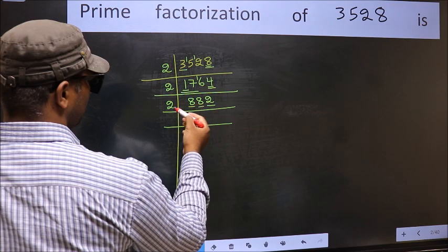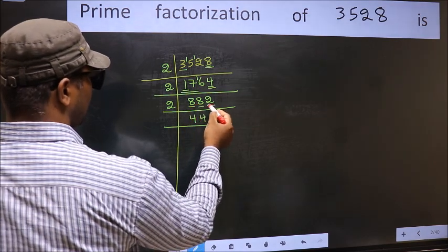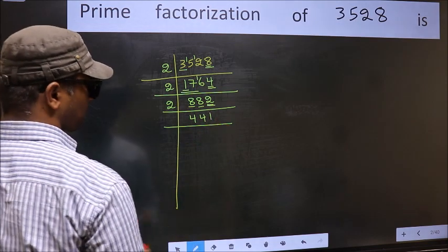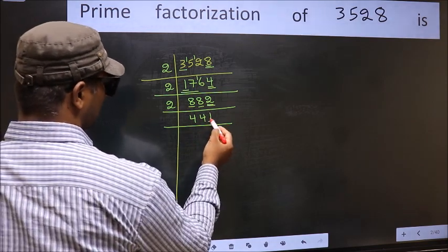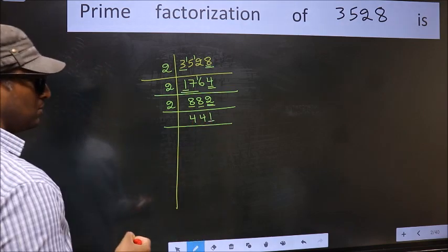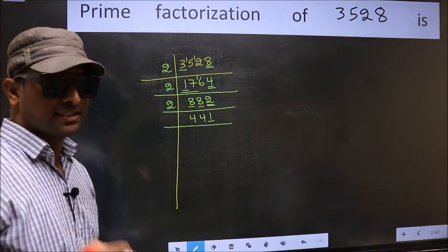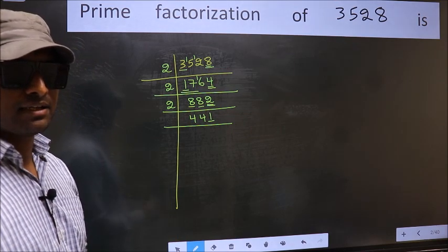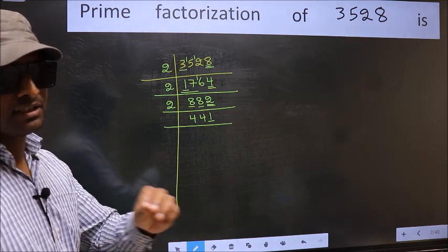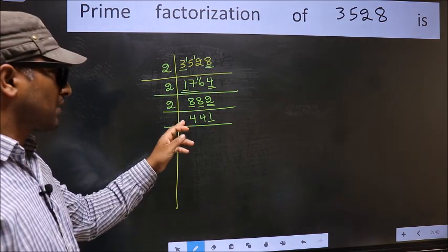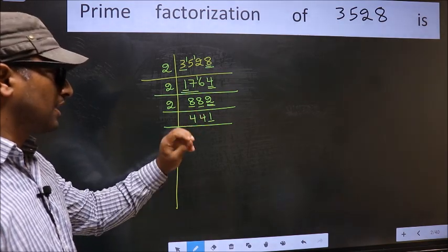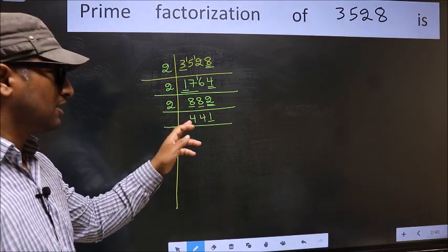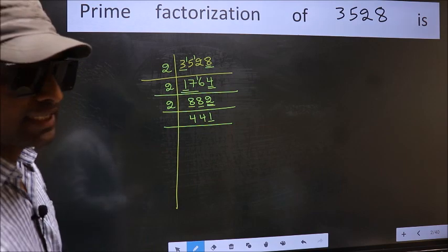The other number 8 — we get 8 in the 2 table: 2, 4's 8. The other number 2 — we get 2 in the 2 table: 2, 1's 2. Now the last digit is 1, which is not even, so this is not divisible by 2. So 882 ÷ 2 = 441.